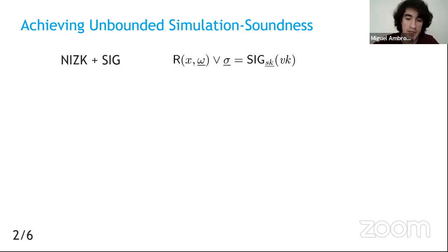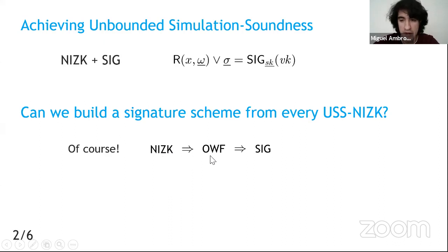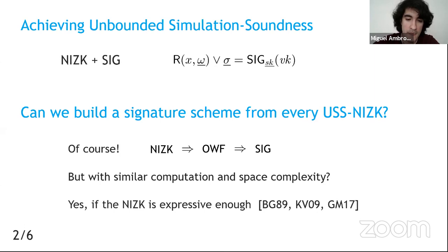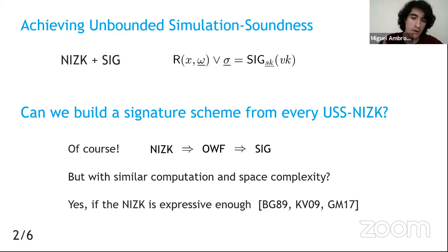We ask whether combining with a signature primitive is necessary, or whether we can build a signature from every USS NIZK. Of course one can via one-way functions, but can we do it with similar computation and complexity? Existing works require the NIZK to be expressive enough. So two questions arise: can we generically extend the expressivity of a NIZK in a black-box language extension? If not, can we build a signature directly from every USS NIZK?